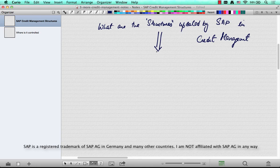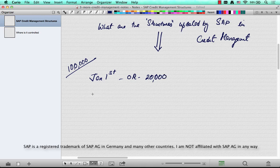What is a structure? To understand structures, let's understand credit management from a different perspective. Take a credit limit, say 100,000, and say on January 1st there is an order worth 20,000, and January 5th there is another order worth 50,000.